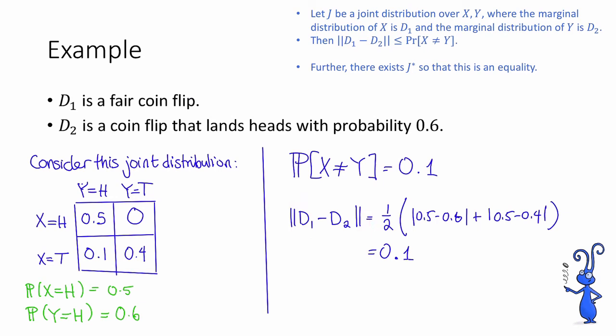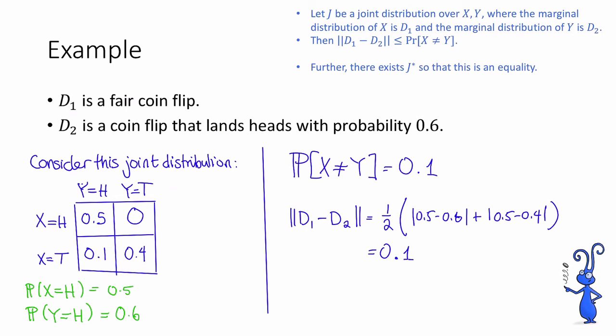Here we have a joint distribution on X and Y so that the probability that X is not equal to Y equals the total variation distance between d1 and d2. I claim we can't fiddle with this distribution to decrease the probability that X is not equal to Y. To see why, imagine what would happen if we tried: we'd have to move this mass — the mass on the event that X is not equal to Y — somewhere else, either here or there. But that would change the marginal distributions. So we can't decrease this probability any further without changing the marginals.